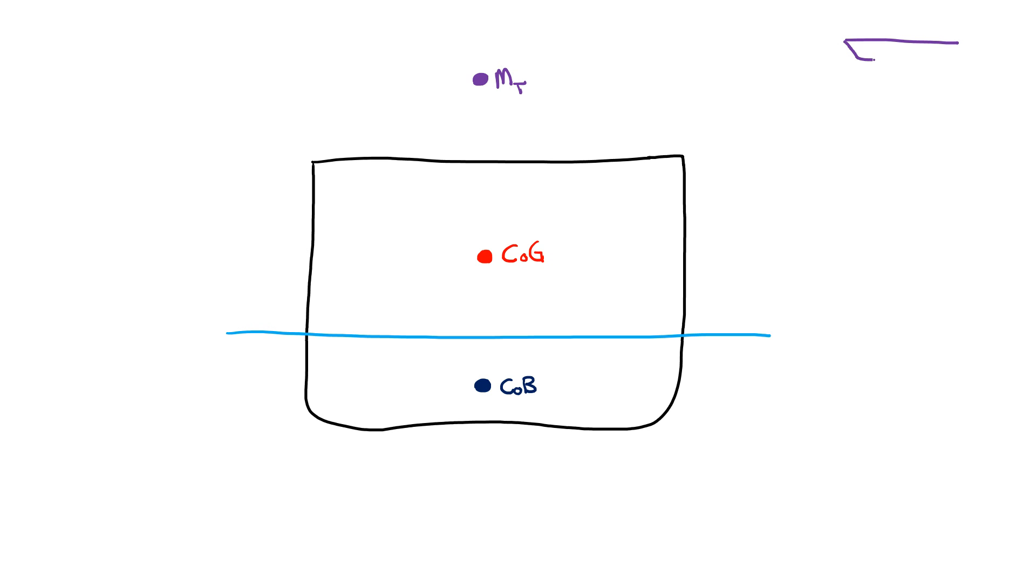We can also look at the ship from the longitudinal direction, and there will also be a metacenter for longitudinal. From this diagram, the distance between the metacenter and the center of gravity is called GM, which is nicknamed the metacentric height.